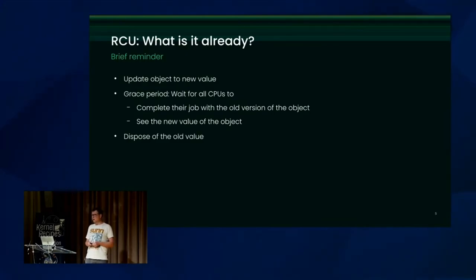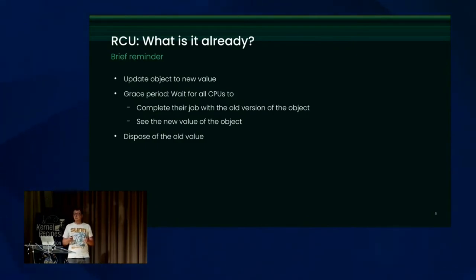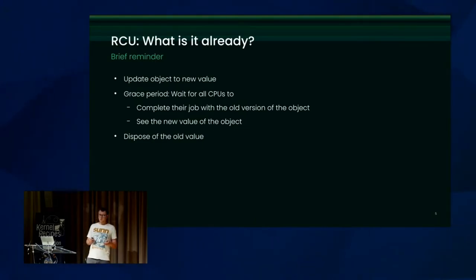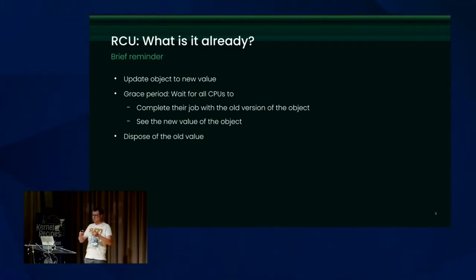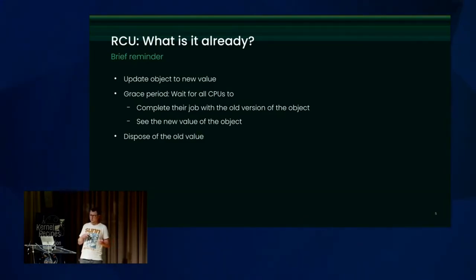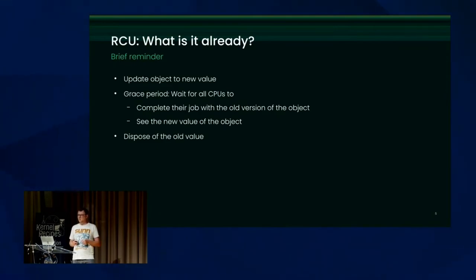That mechanism allows readers to run concurrently between them and allows readers to run concurrently with writers. Unlike locking-based synchronization, you have races — it's just that those are controlled races. An updater changes the value of an object to some new value, then it waits for a grace period. A grace period is a time frame during which readers might still see the old value of the object, prior to the update.